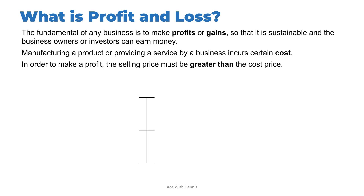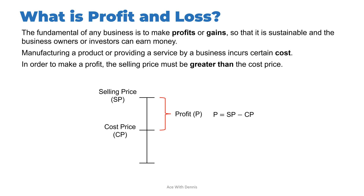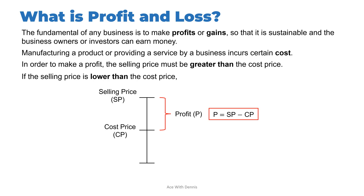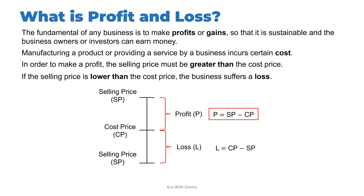In order to make a profit, the selling price must be greater than the cost price. This price diagram shows how profit or loss can happen. If the selling price is greater than the cost price (CP), a profit is made: profit equals selling price minus cost price. If the selling price is lower than the cost price, the business suffers a loss: loss equals cost price minus selling price.